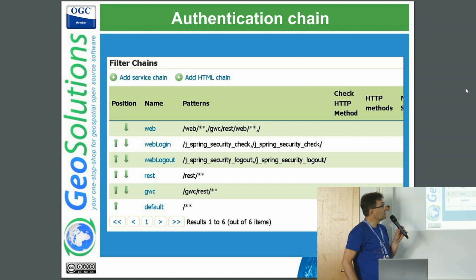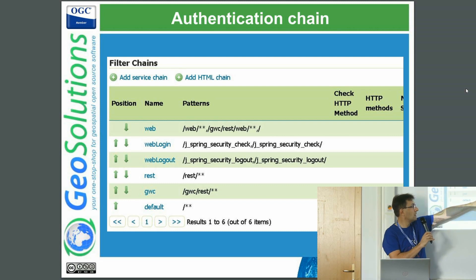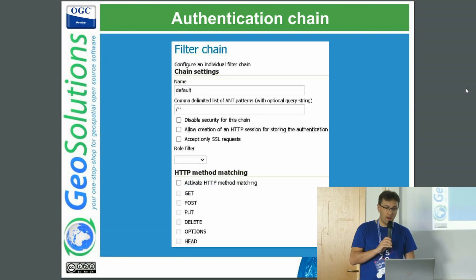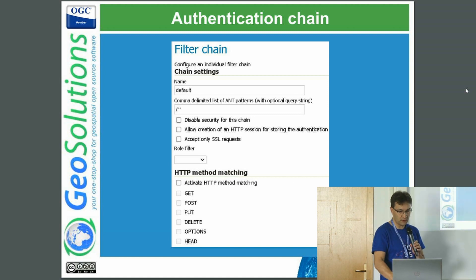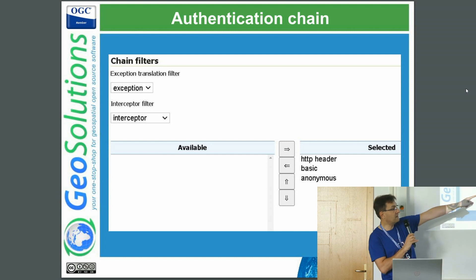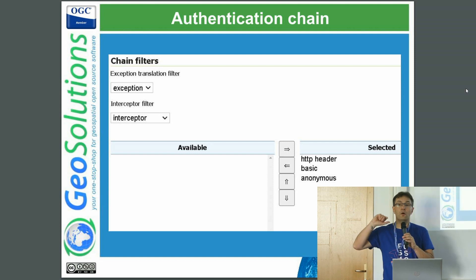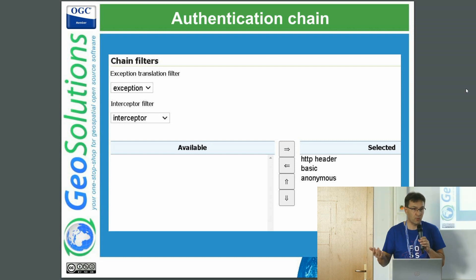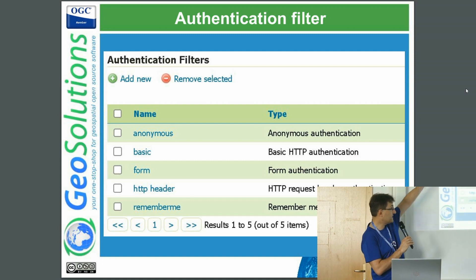Here's one example of setting up the authentication chain: we have a chain for the web interface, a chain for the REST interface, another for the GWC cache configuration REST API, and the default one which typically handles OGC requests. The filter chain is the configuration of the set of steps you will try in order to authenticate — for example, trying an HTTP header the proxy might have provided, or using HTTP basic, or if nothing else works, assuming the user is anonymous.